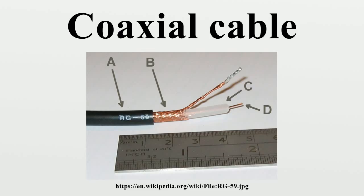RG62 is a 93 ohm coaxial cable originally used in mainframe computer networks in the 1970s and early 1980s. Later, some manufacturers of LAN equipment, such as Datapoint for ARCNET, adopted RG62 as their coaxial cable standard. The cable has the lowest capacitance per unit length when compared to other coaxial cables of similar size. Capacitance is the enemy of square wave data transmission, and this is a much more important factor for baseband digital data transmission than power handling or attenuation. All of the components of a coaxial system should have the same impedance to avoid internal reflections at connections between components.